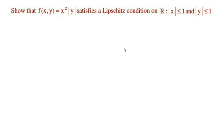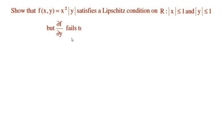Here we have to show that the function f(x, y) from y' = f(x, y) satisfies a Lipschitz condition on the rectangle |x| ≤ 1 and |y| ≤ 1. But the first-order partial derivative ∂f/∂y fails to exist at many points of this rectangle.